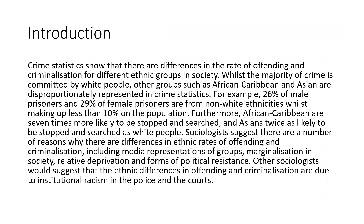I like to do an introduction — you don't have to — but I'm setting the scene for how I'm going to answer the question, giving some statistics to identify the differences between ethnic groups. Crime statistics show that there are differences in the rate of offending and criminalisation for different ethnic groups in society. Whilst the majority of crime is committed by white people, other groups such as African Caribbean and Asian are disproportionately represented in crime statistics. For example, 26% of male prisoners and 29% of female prisoners are from non-white ethnicities, while around 85% of the UK population are white. Furthermore, African Caribbean people are seven times more likely to be stopped and searched, and Asians are twice as likely to be stopped and searched as white people. SUS laws and stop and search are concepts worth discussing here.